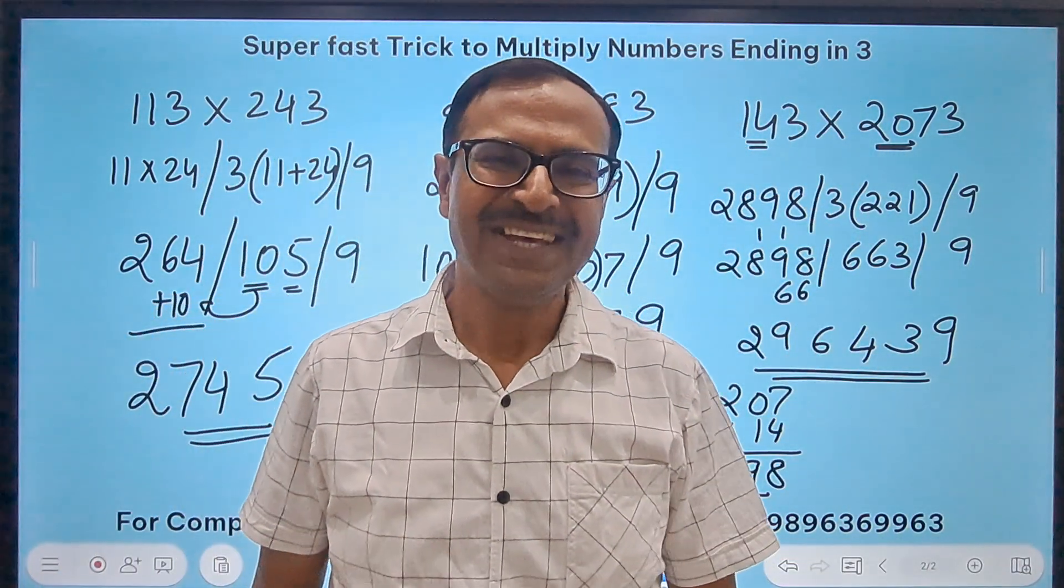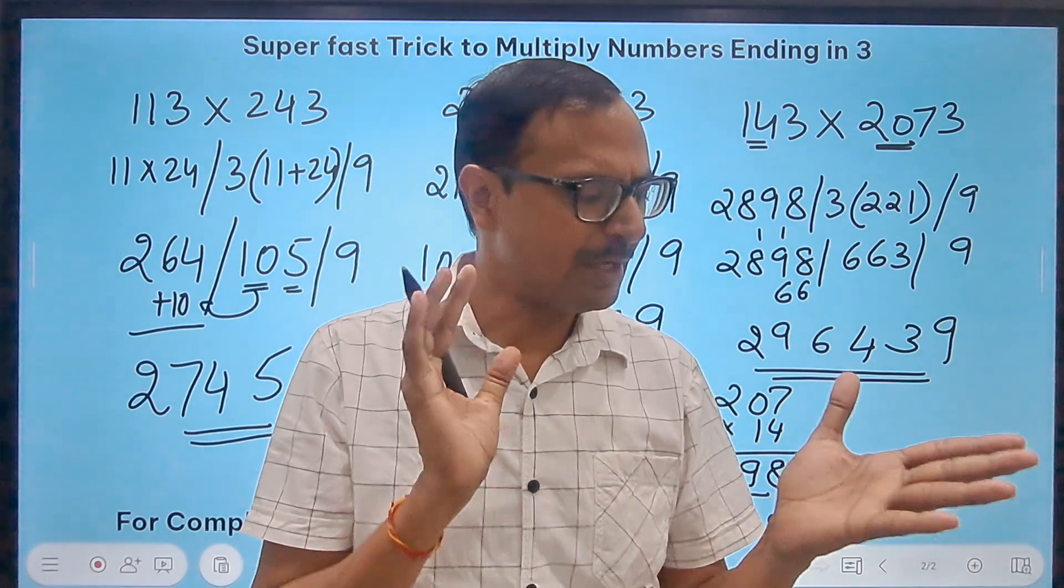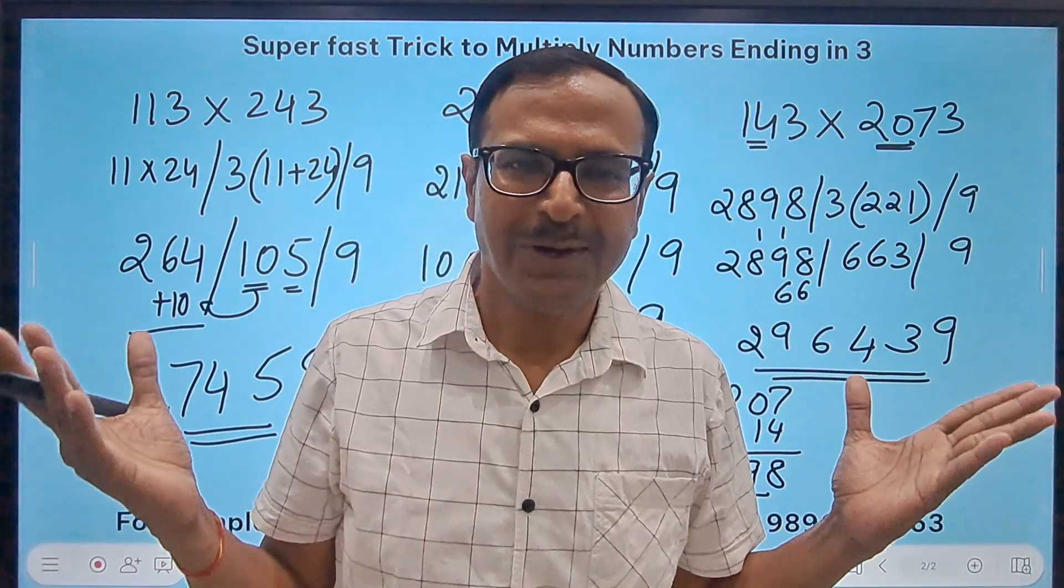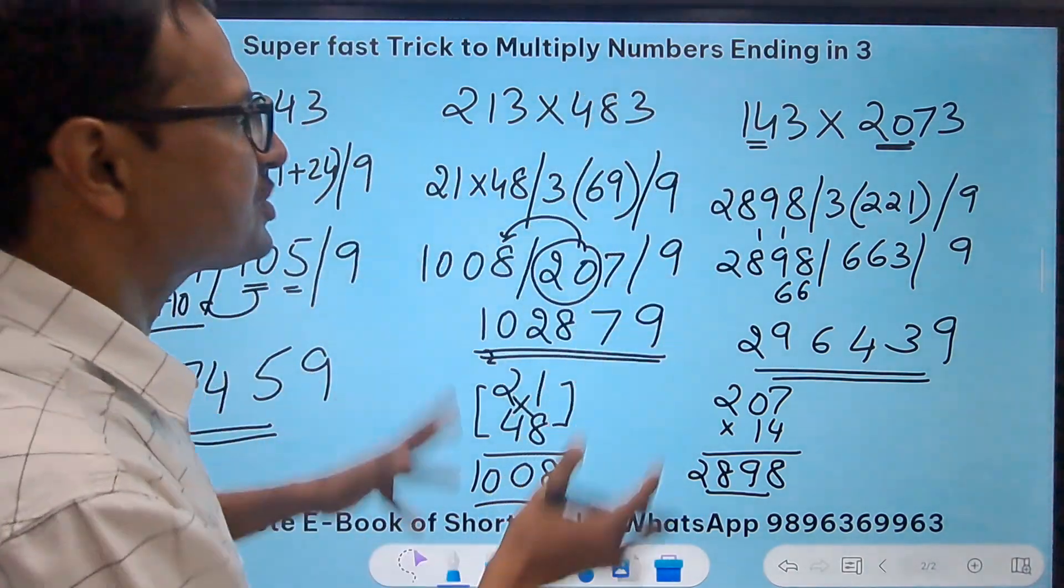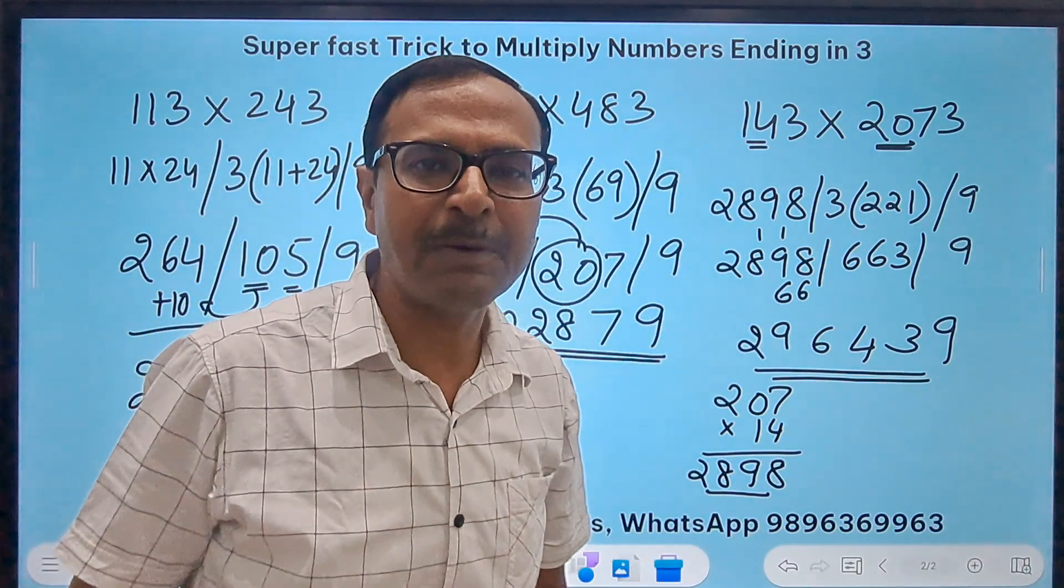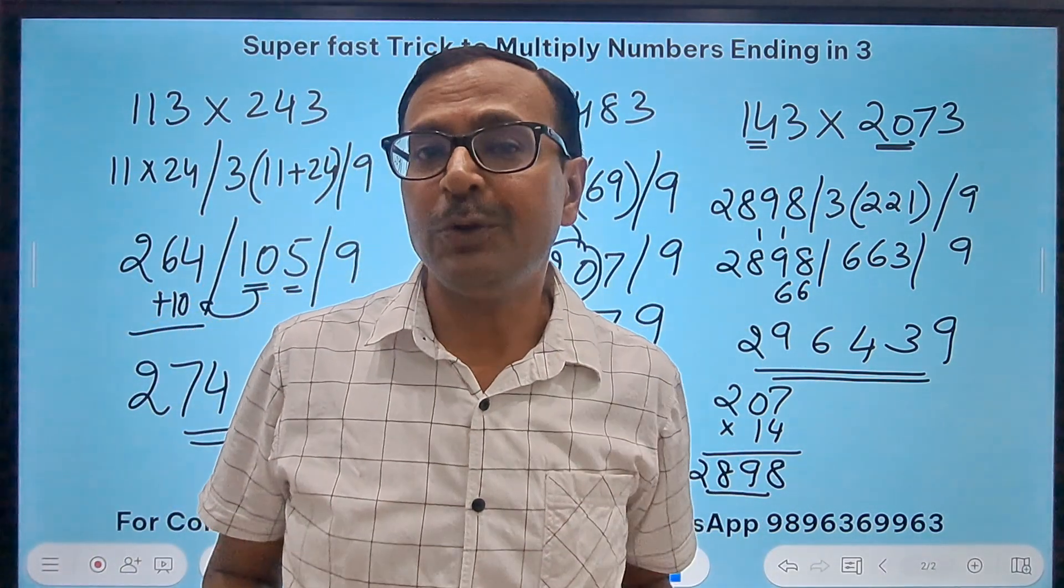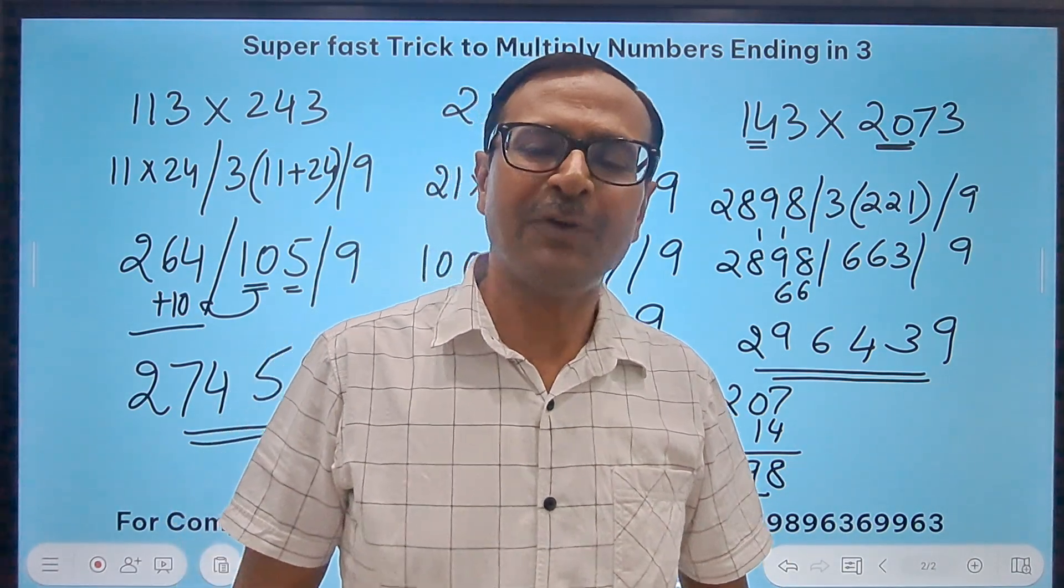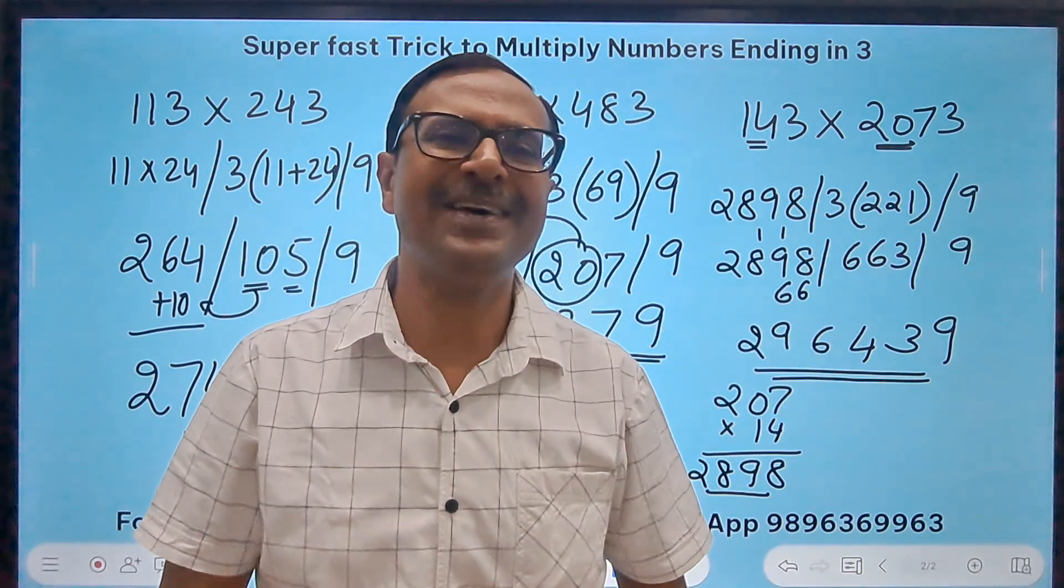So numbers ending in 3, remember the trick P3S9, and there we go. Practice 30, 40, 50 such questions by taking random numbers which end in 3, and you will find the trick very useful friends.